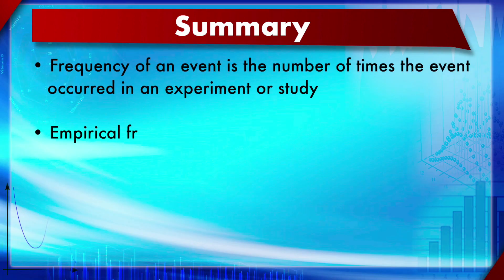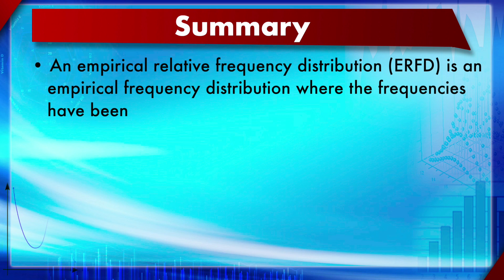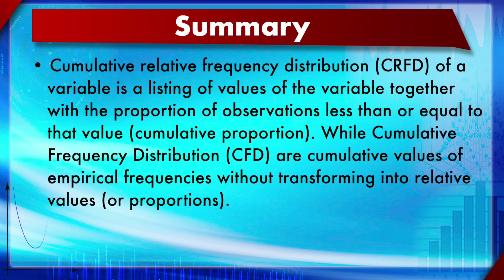In summary: frequency of an event is the number of times it occurred in an experiment or study. Empirical Frequency Distribution (EFD) is a table of values or ranges (bins) with their frequencies. Empirical Relative Frequency Distribution (ERFD) divides each frequency by the sample size. Cumulative Relative Frequency Distribution (CRFD) lists values with the proportion of observations less than or equal to that value. Cumulative Frequency Distribution (CFD) is the cumulative version of EFD without converting to relative proportions.